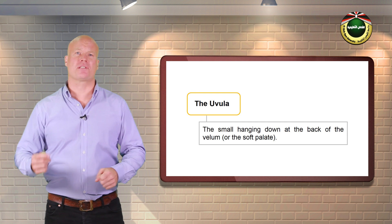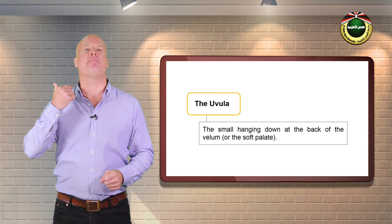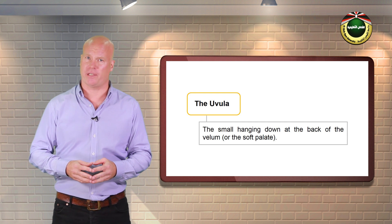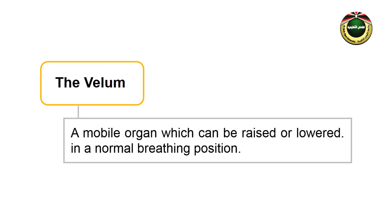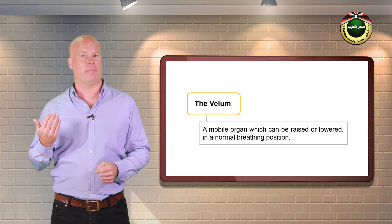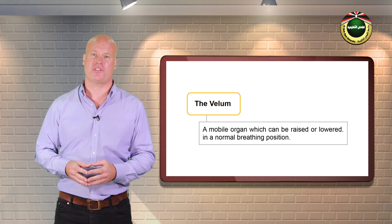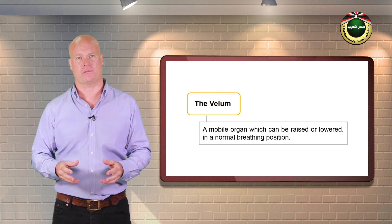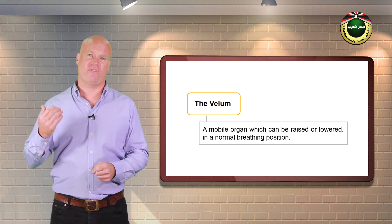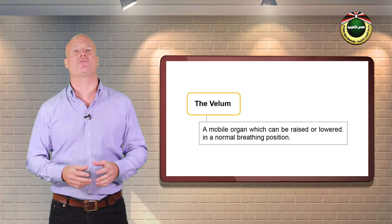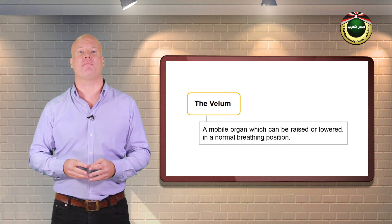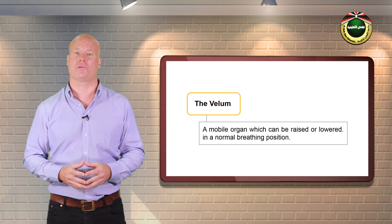The uvula is the small part hanging down in the back of the velum, or the soft palate. The velum is a mobile organ which can be raised or lowered. In a normal breathing position, it is left hanging down or lowered. When the back of the velum is lowered, the air escapes through the nasal cavity, and the sounds uttered in this way are called nasal sounds. But when the back of the velum is raised, the nasal tract is shut off and allows the air to escape through the mouth, producing oral sounds.